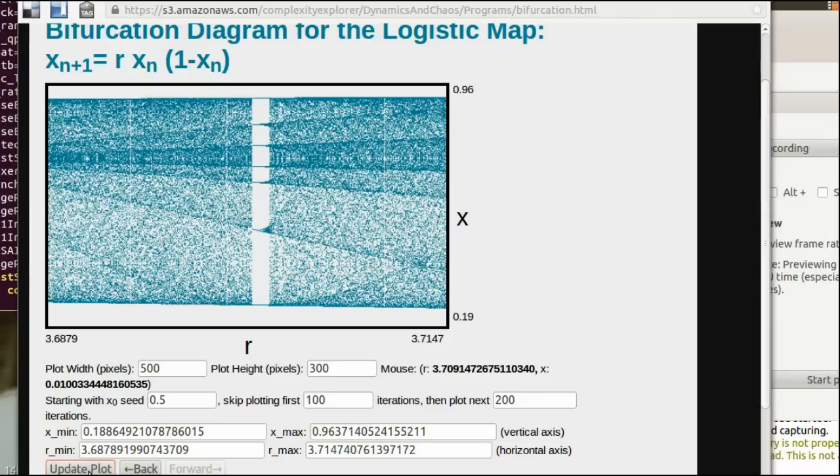Let's see what this window is. One, two, three, four, five, six, seven. So here's a region of period seven. A small little region at about 3.702. And let me go back.